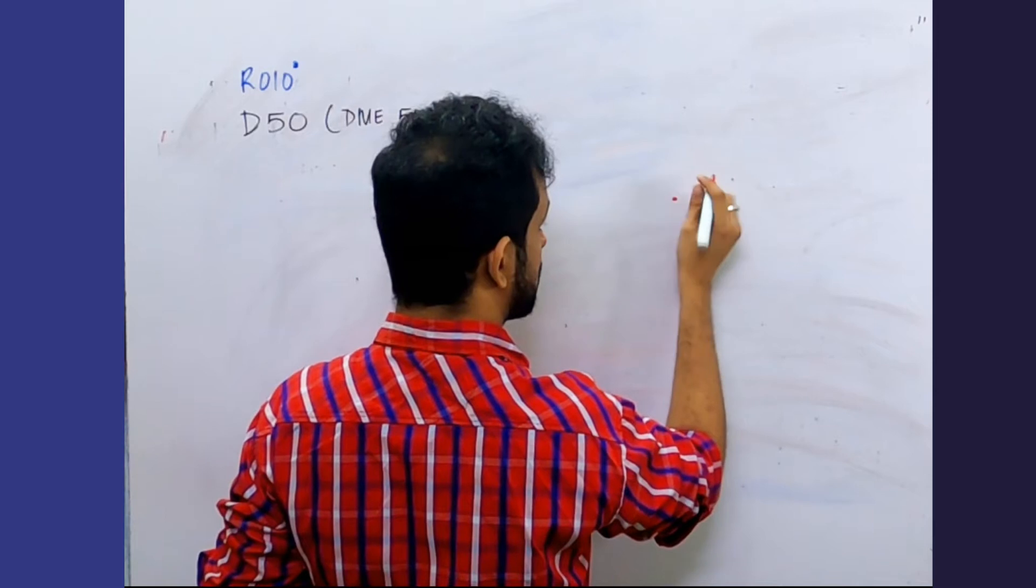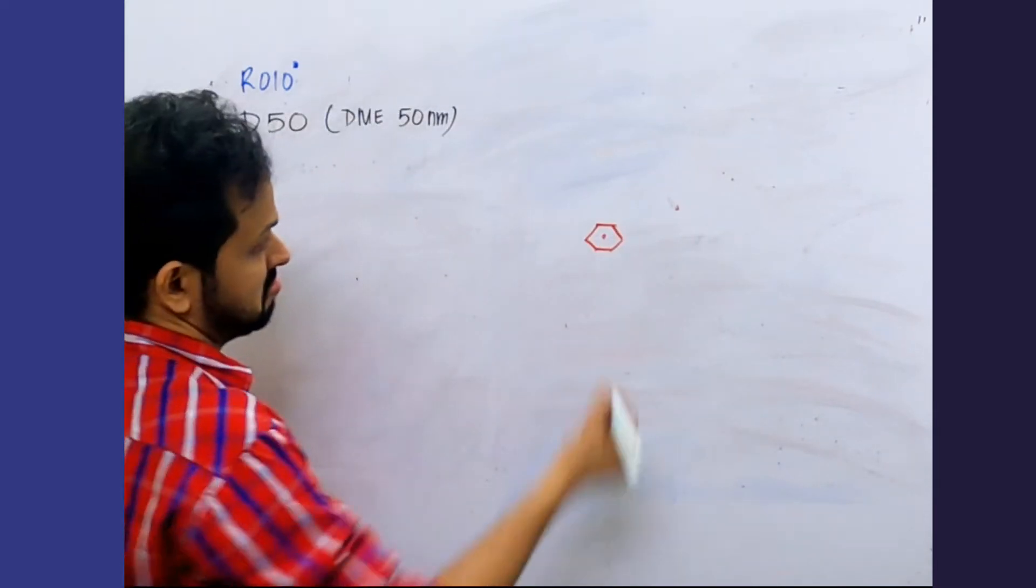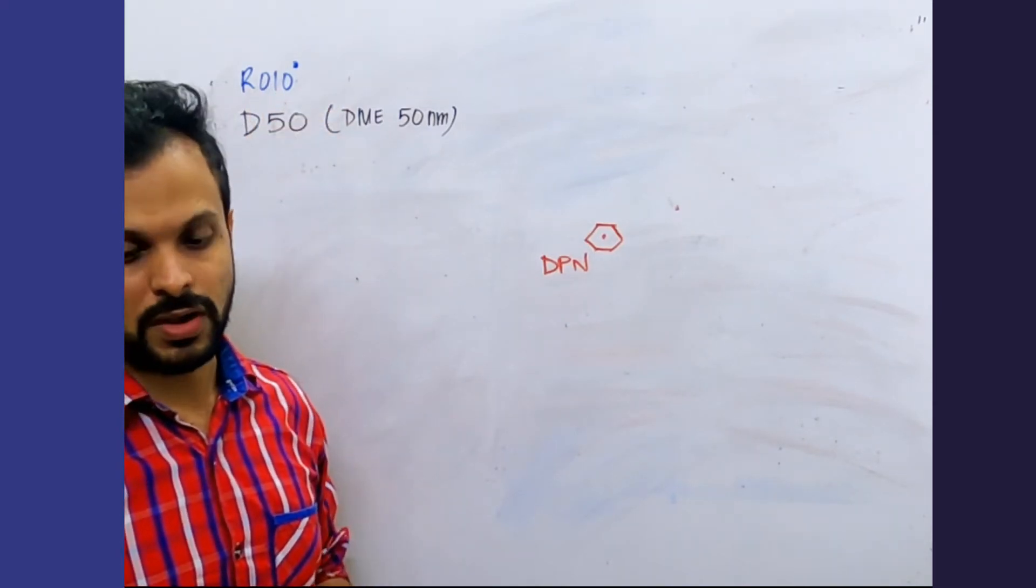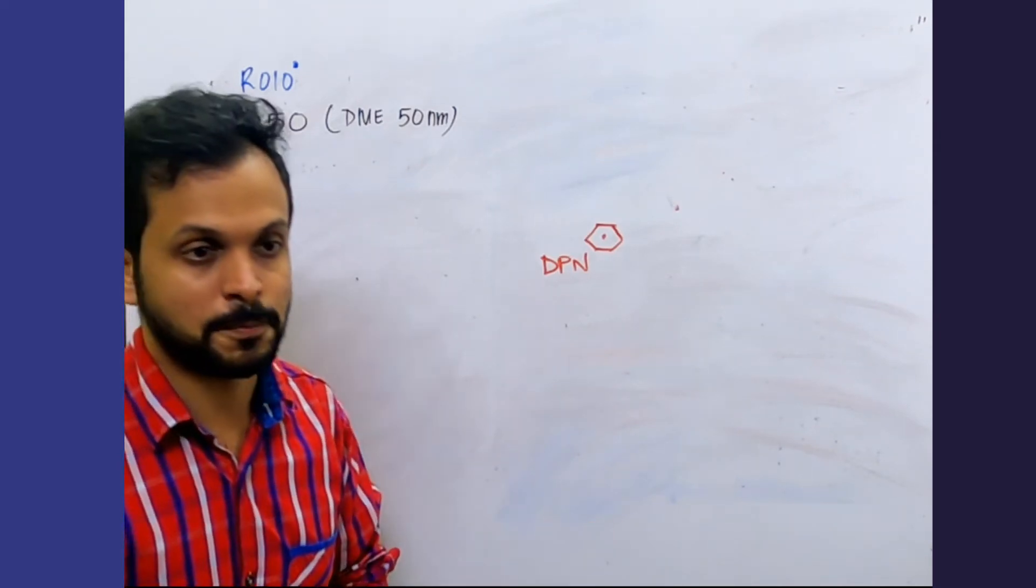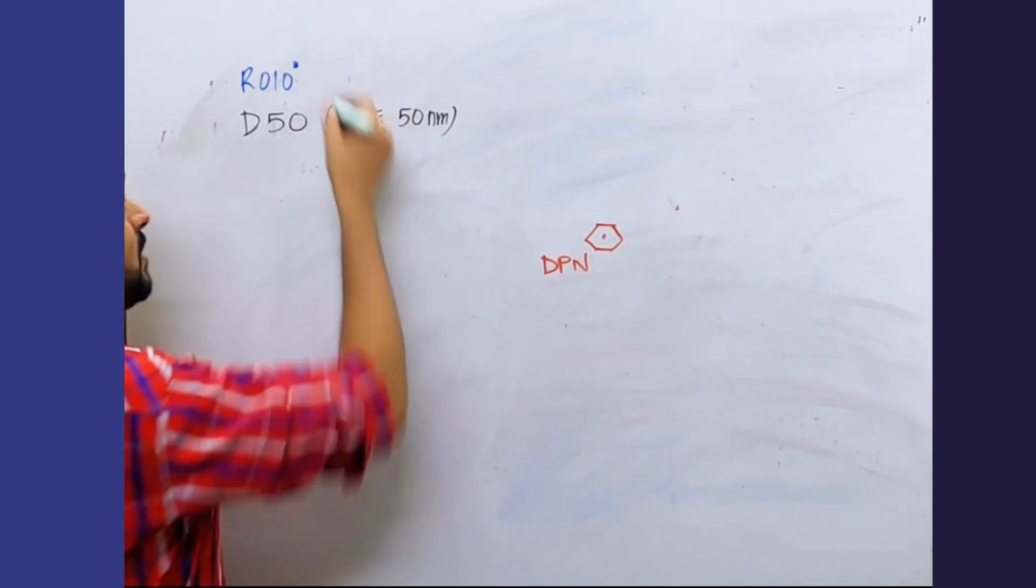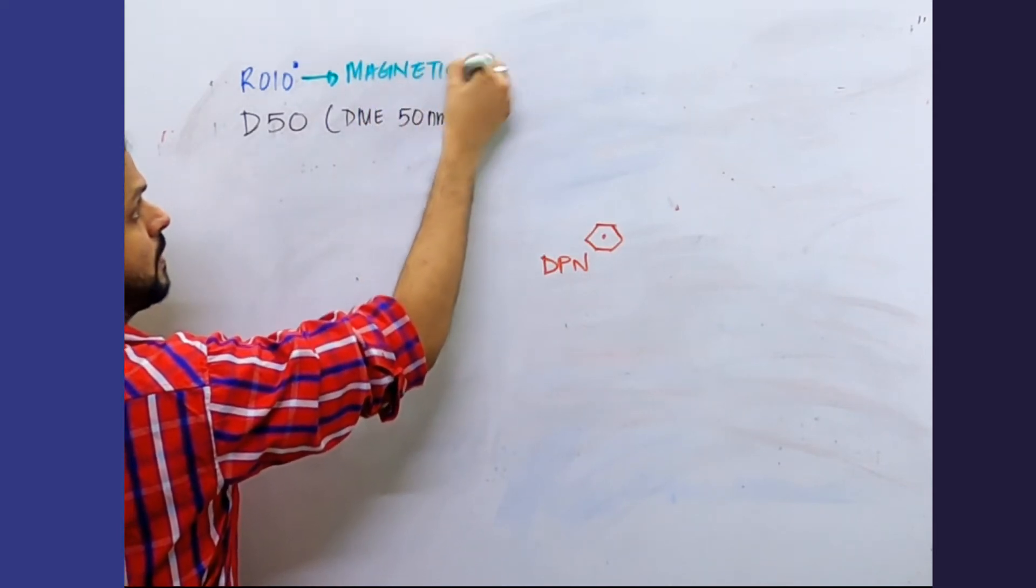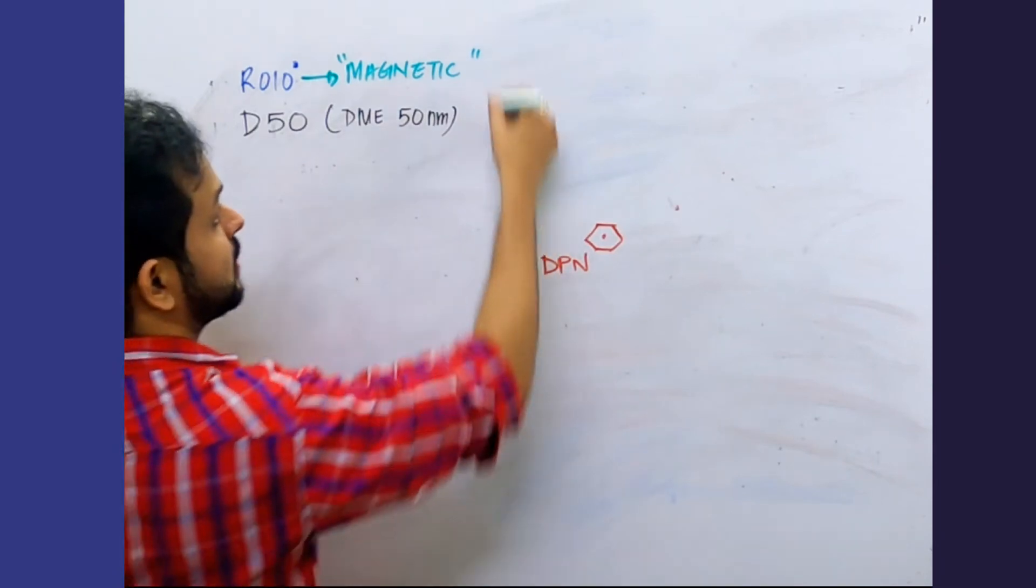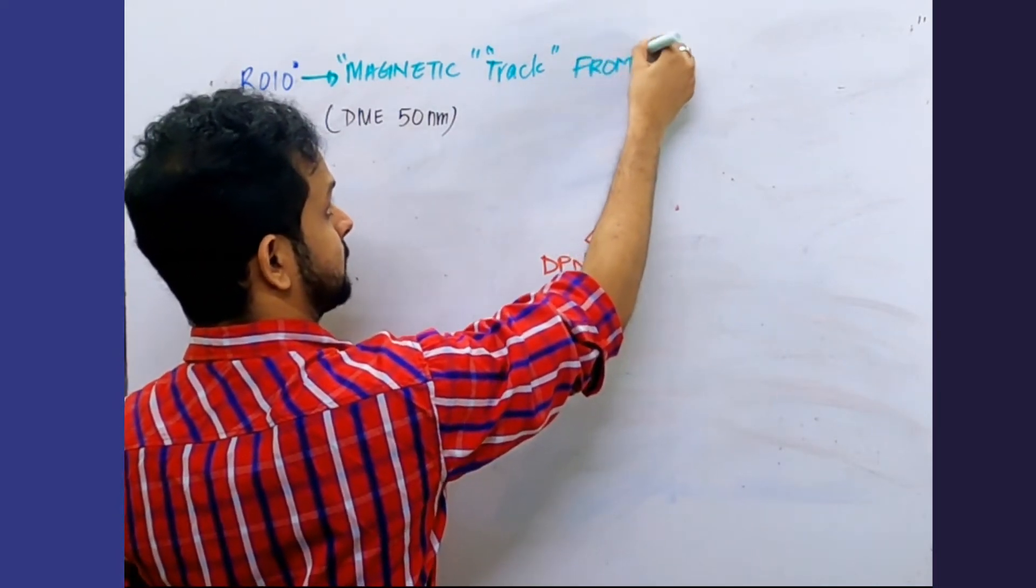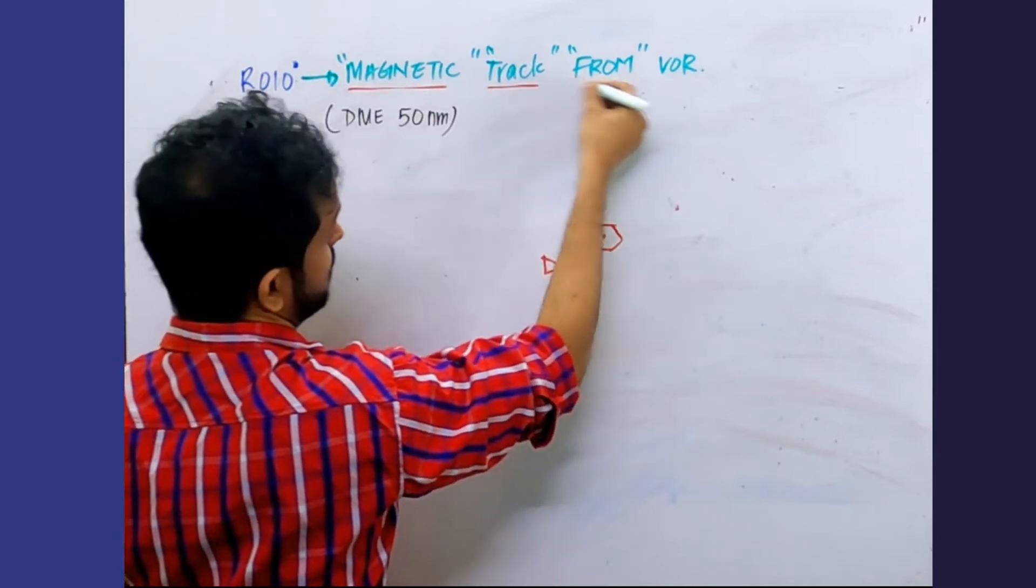So we have a VOR and it's DME, and the aircraft is on a radial of 010 of the VOR. Can you explain what a radial would be? It's just for the people who are streaming for their revisions. A radial is basically magnetic, point number one. Magnetic track, point number two. Point number three is the most important part: from VOR. Three things to understand: magnetic track from the VOR.